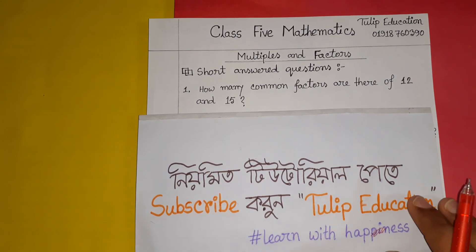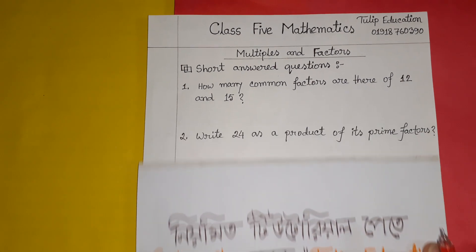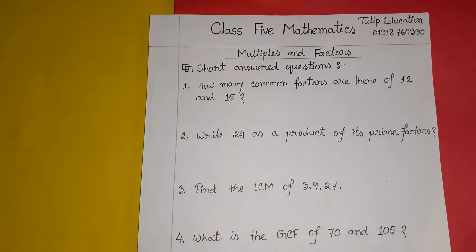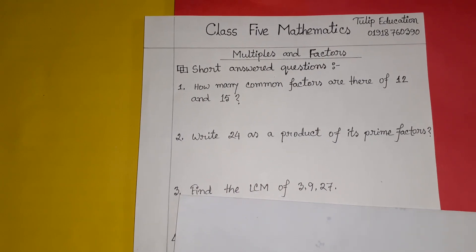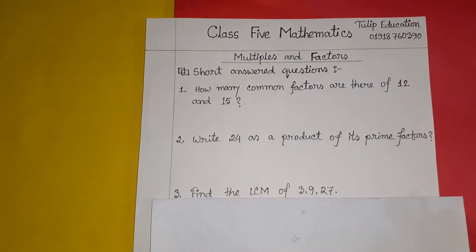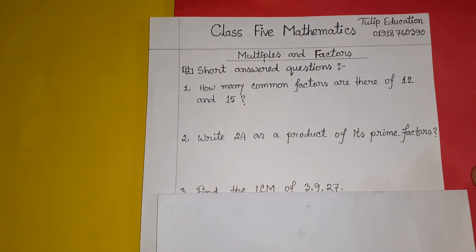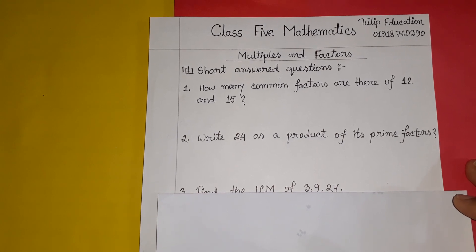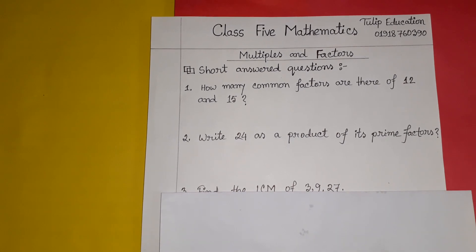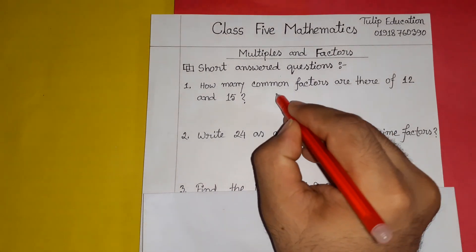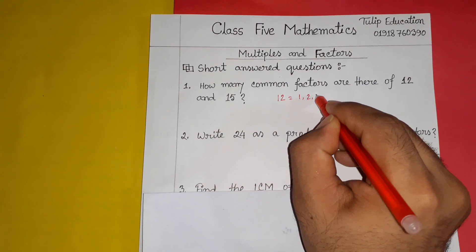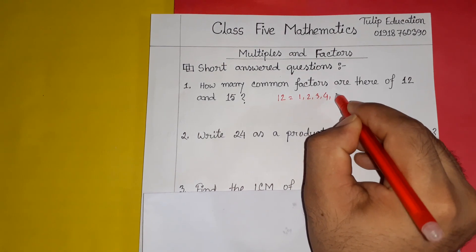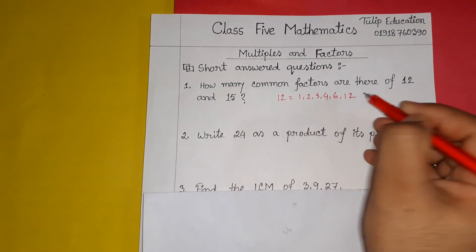My first question is: how many common factors are there of 12 and 15? Factors are the numbers by which a given number can be divided. So let's analyze 12: 12 can be divided by 1, 2, 3, 4, 6, and 12.